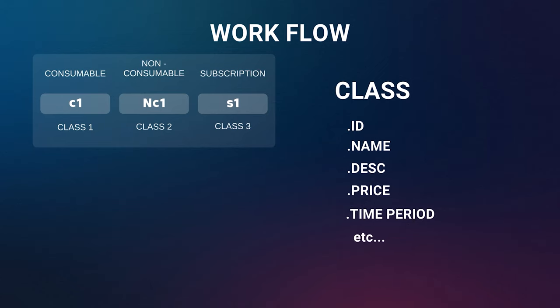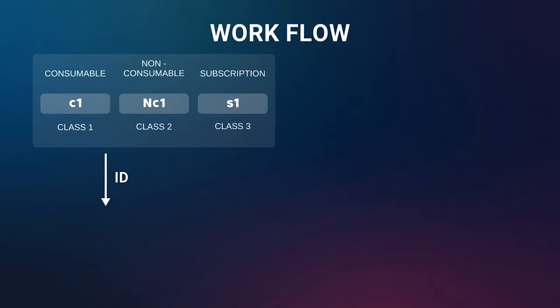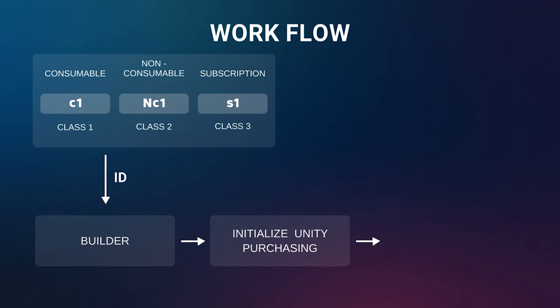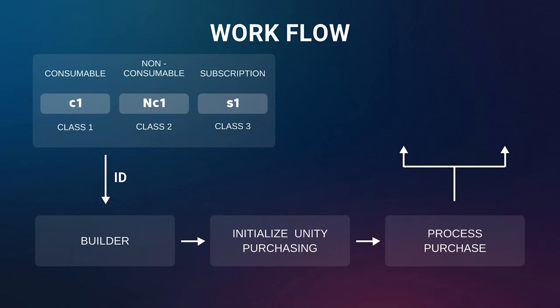Once we have stored all the data inside the classes, we need to feed that data into the builder. This builder comes from the Unity package itself, so we don't have to worry about it. The builder helps in referencing the specific in-app purchase created in the Google Play Store. The third step is to initialize Unity Purchasing. Once initialized, Unity will do all its work and we'll be ready to click buttons and make payments, resulting in success or failure.